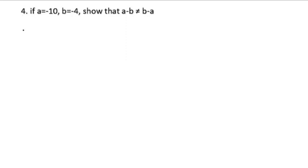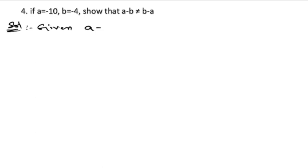Fourth problem: if a is equal to minus 10 and b is equal to minus 4, show that a minus b is not equal to b minus a. Here they have given some values. Given: value of a is minus 10 and